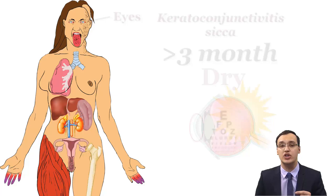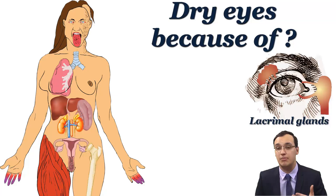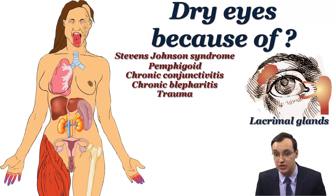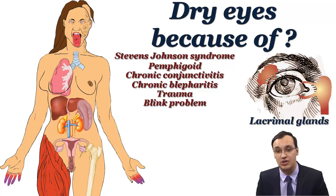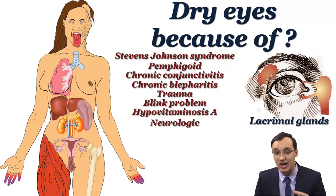Which exocrine glands are destroyed in dry eyes? It's the lacrimal glands. Is there any other disease that can cause dry eyes? Yes — for example, inflammation from Stevens-Johnson syndrome, pemphigoid, chronic conjunctivitis, chronic blepharitis. There can also be simple trauma, a blinking problem, hypovitaminosis A (vitamin A deficiency), neurologic problems affecting the eyelids or lacrimal glands, and even drugs such as anticholinergics, diuretics, antihistamines, or antidepressants.